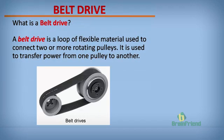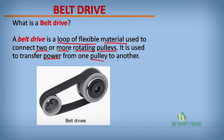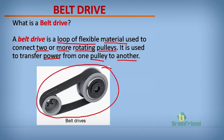What do we understand by a belt drive? The transmitting of power using a belt is a belt drive. A belt drive is a loop of flexible material used to connect two or more rotating pulleys. It is used to transfer power from one pulley to another. This image shows a belt drive — this is a pulley, this is another pulley, and this is your belt. There is a transfer of power and energy from one pulley to the other.